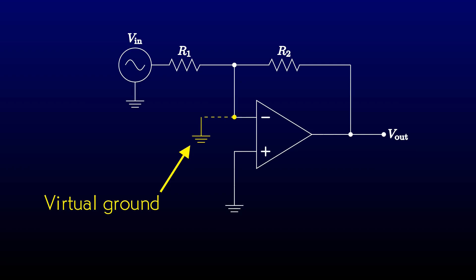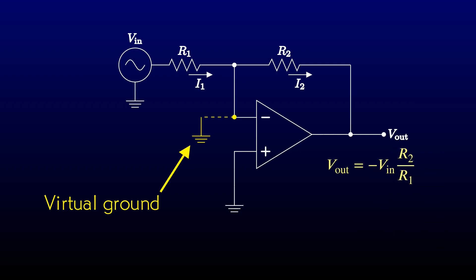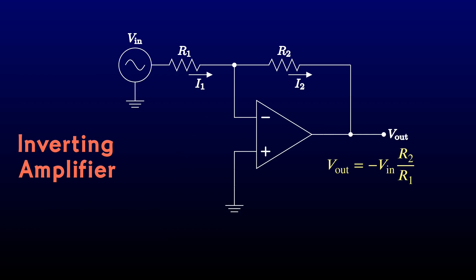Don't ever be tempted to tie it to a real ground. If you did, the op-amp wouldn't have to do any work to hold it at ground, so it wouldn't generate any output voltage. The first golden rule of op-amps tells us that the minus input is passing no current. Kirchhoff's current law then tells us that the currents through the two resistors have to balance. Ohm's law will then give us the formula for the output voltage. The gain is negative, so just as we called the previous circuit a non-inverting amplifier, we call this one an inverting amplifier. This one is even more common than the non-inverting amplifier. Because of the virtual ground, we can see at a glance that the input impedance is simply the resistance R1. The output impedance is still very low because it's still the output of an op-amp in a negative feedback loop.